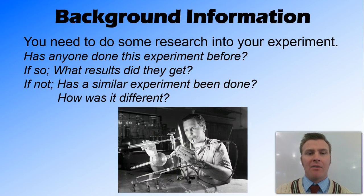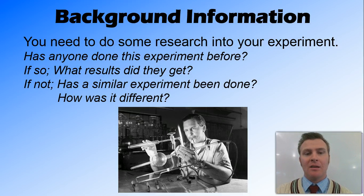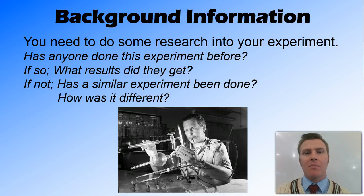You then need to look at some background information and do a bit of research to find out whether this experiment has been done before. If it's been done before, you need to include who did it, when they did it, and the results they got. If it hasn't been done before, you need to find a similar experiment, explain how it was different, and whether you might see different results because of those differences. This builds on the bank of knowledge we have in science.